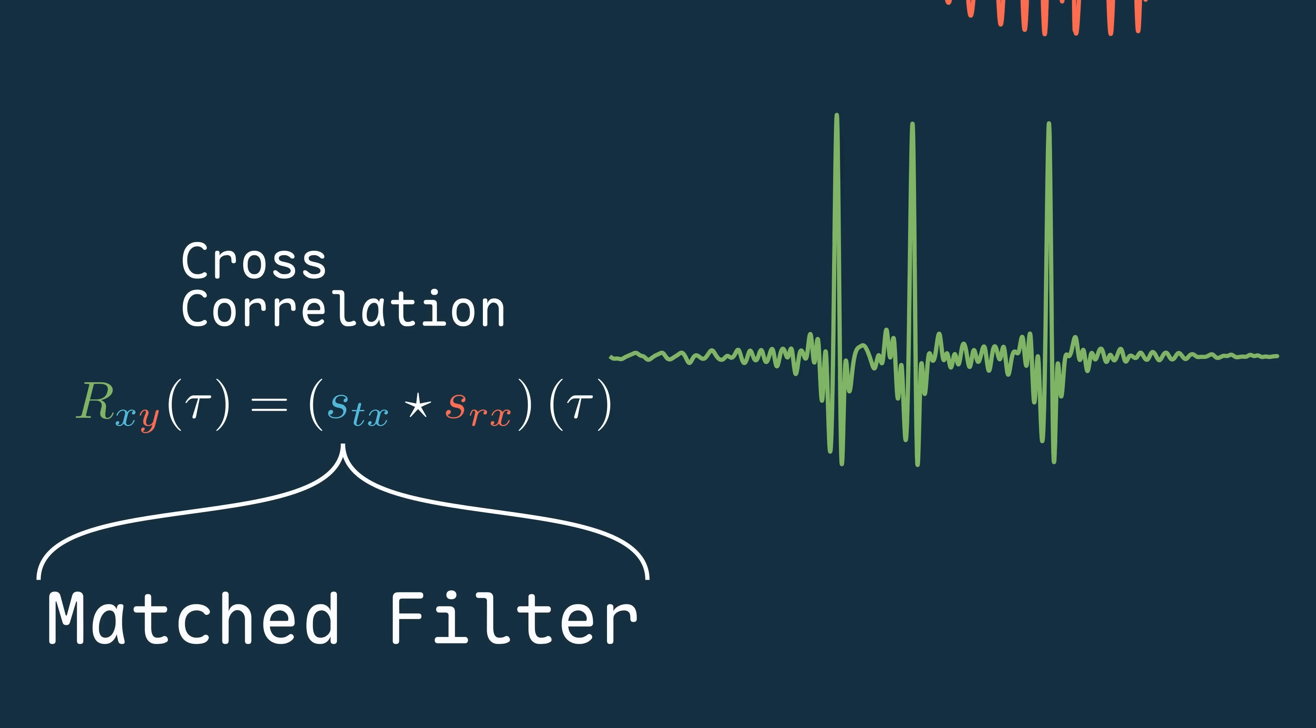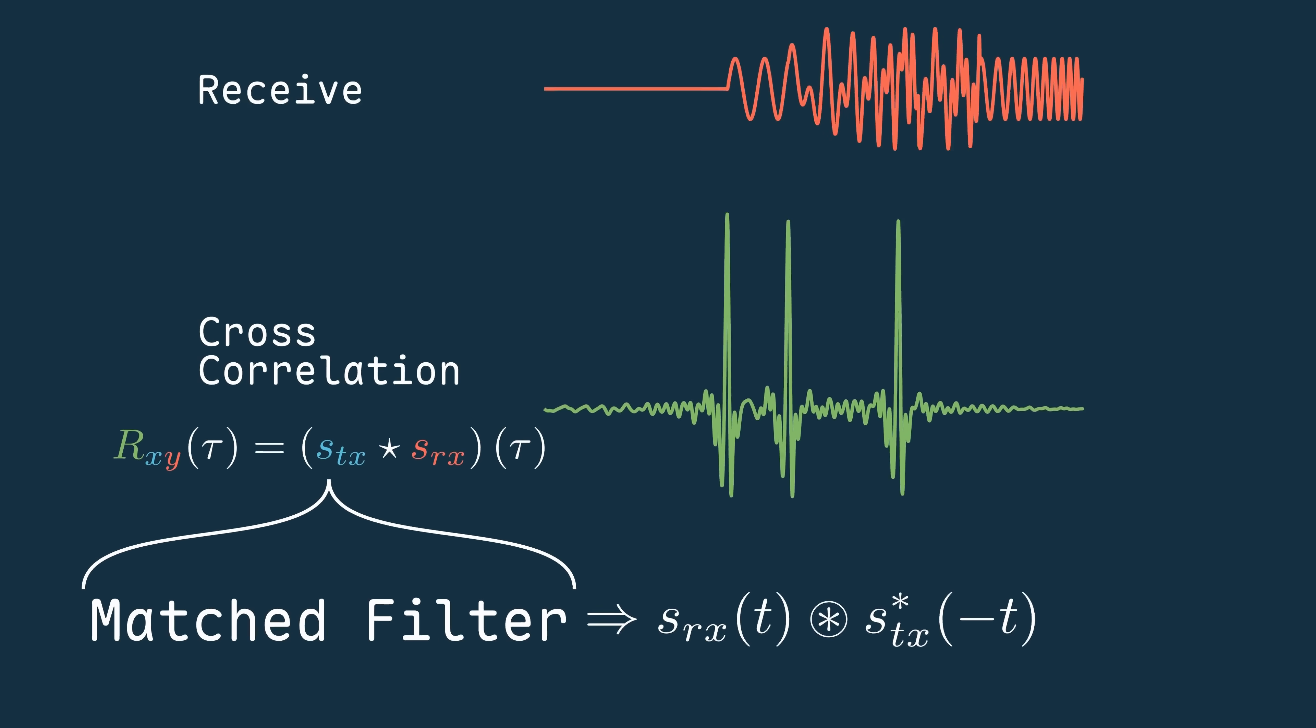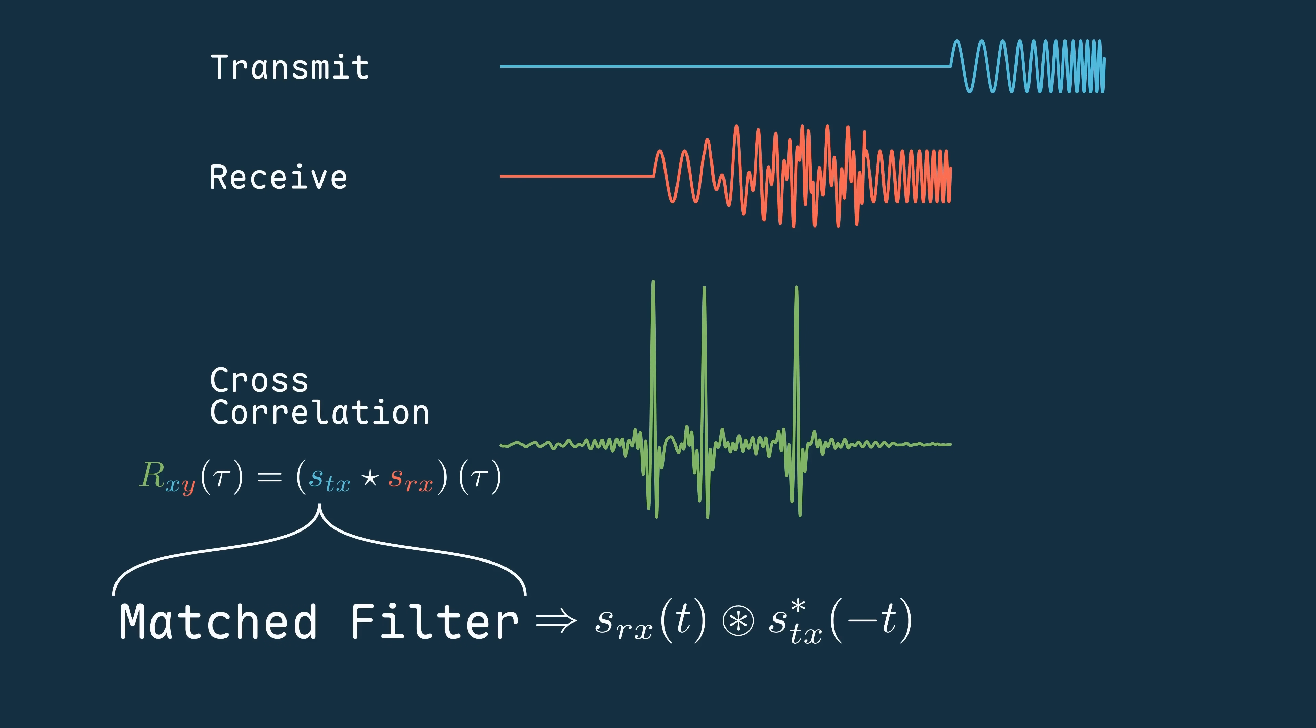Mathematically, matched filtering is equivalent to convolving the received echo with a time-reversed, complex conjugated copy of the transmit pulse. But that's just the same as computing their cross-correlation, that's just how it's implemented in the real hardware.